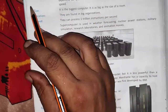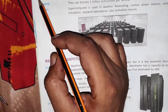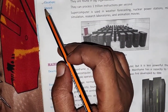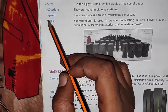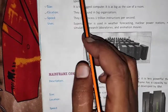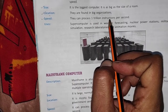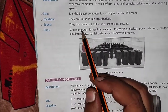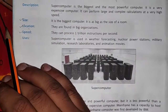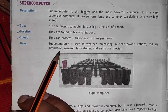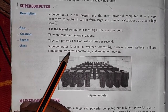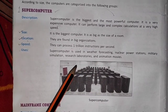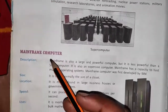Supercomputers are located in big organizations, big companies, or government departments. The speed of supercomputers is one trillion instructions per second. The uses of supercomputers include weather forecasting, nuclear power stations, military simulation, research laboratories, and creating animation movies. This is the diagram of a supercomputer, which can process one trillion instructions per second.